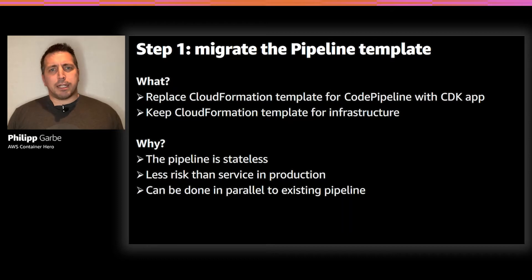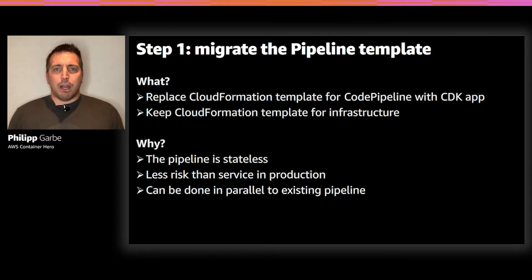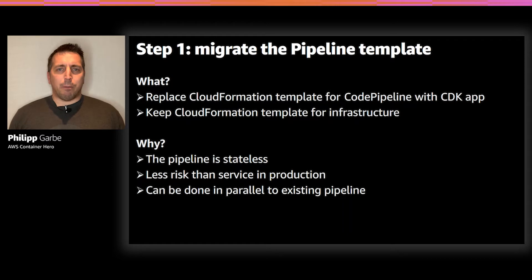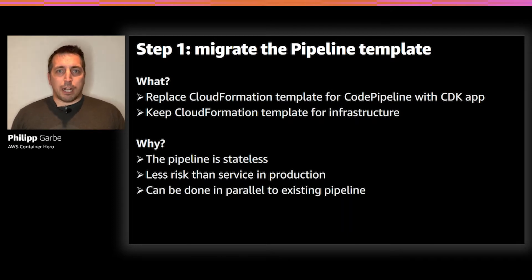What I did is I placed the CloudFormation template for the code pipeline into a CDK application, but I did not change anything of the infrastructure — I did not change the CloudFormation template. Why is that a good first step? First of all, the pipeline is stateless. There may be some build artifacts, but they are ephemeral and you can easily recreate them. The good thing is also that you can set up such a pipeline in parallel, deploy to another stack, or even to a different account. That means it's less risk than if you change something on the server that runs in production.